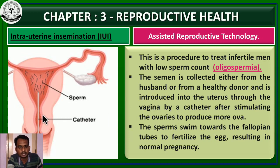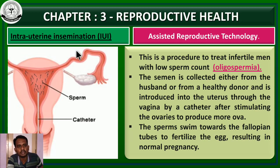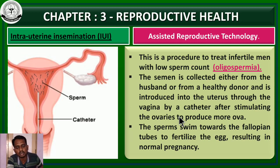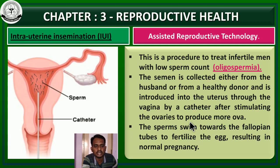A catheter helps with insemination of sperm into the uterus. The semen is collected either from the husband or from a healthy donor and introduced into the uterus through the vagina by a catheter, after stimulating the ovaries to produce more ova. When sperm and egg are available in the fallopian tube at the same time, the sperm swim towards the fallopian tube to fertilize the egg, resulting in normal pregnancy. This is the first technique — intrauterine insemination.